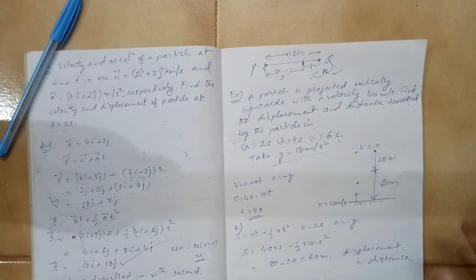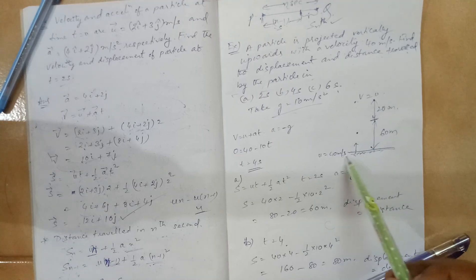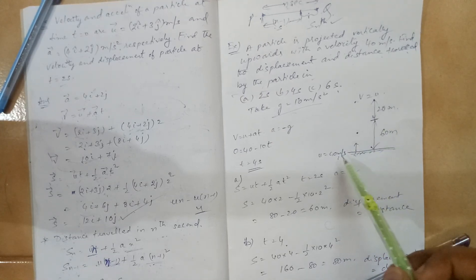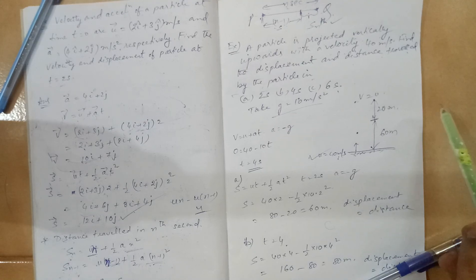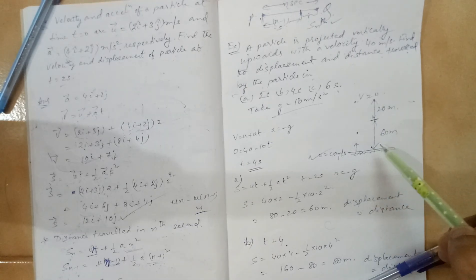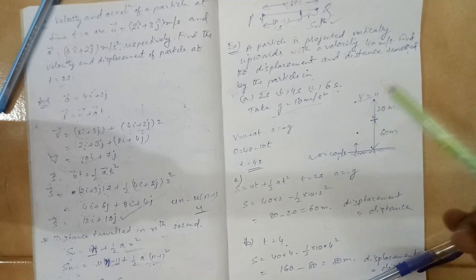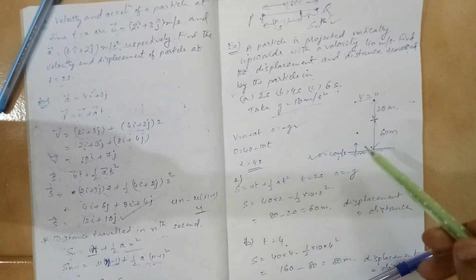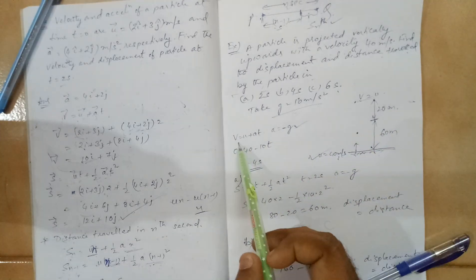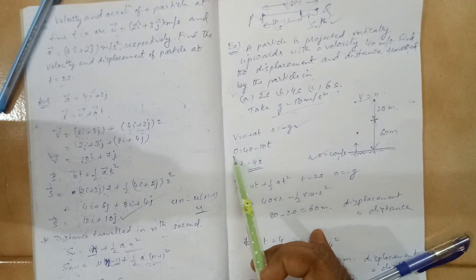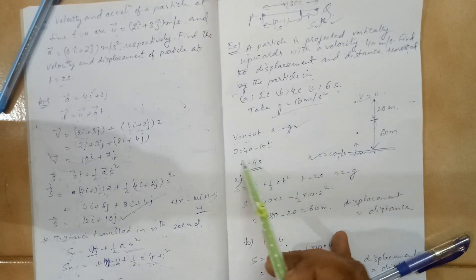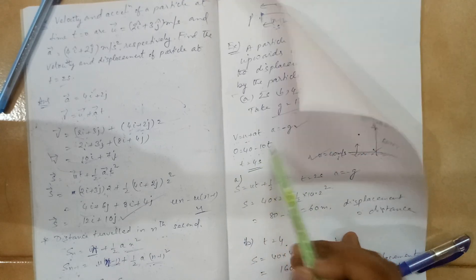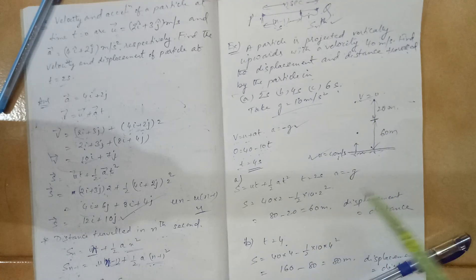Find the displacement and distance travelled by the particle in 2 seconds, 4 seconds, and 6 seconds. Take g = 10 m/s². The particle is projected upwards with a speed of 40 m/s. At the topmost point, velocity will be 0. Acceleration is −g. Using v = u + at: 0 = 40 − 10t, giving t = 4 seconds. So it takes 4 seconds to reach the topmost point.